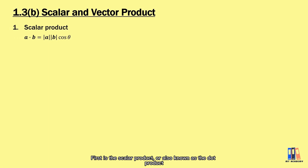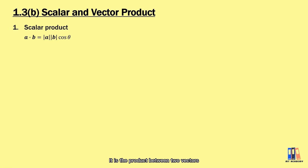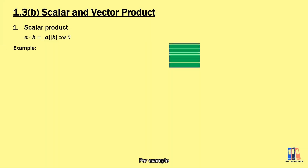First is the scalar product, also known as the dot product. It is the product between two vectors that gives you a scalar as a result.